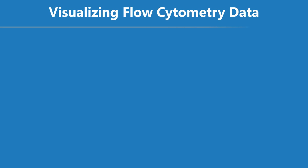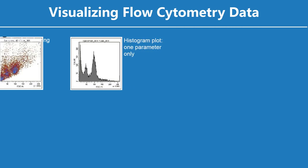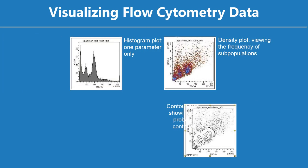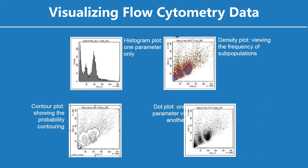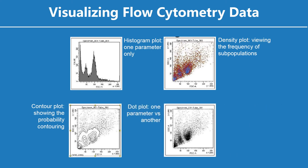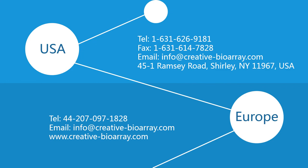Flow cytometry data are usually presented as single-parameter histograms or as plots of correlated parameters, referred to as cytograms. Cytograms may display data as dot plots, contour plots, or density plots. If you have any questions, please feel free to contact us. Thank you.